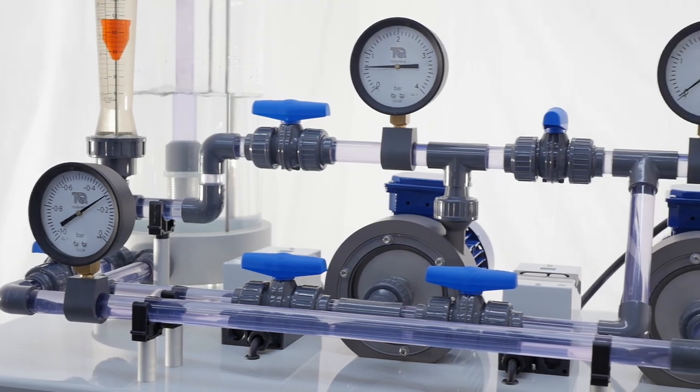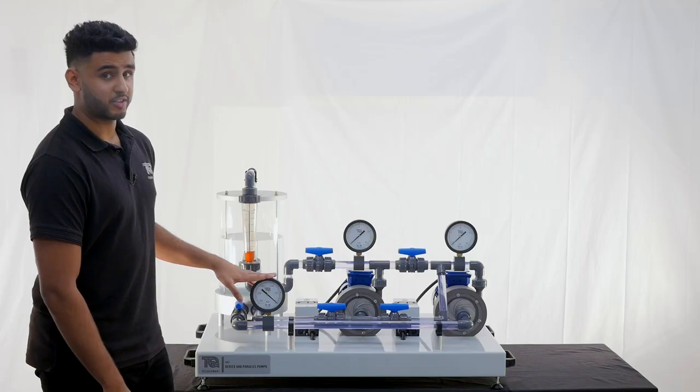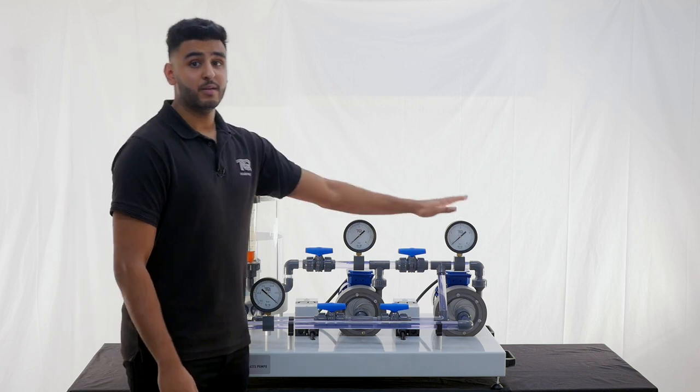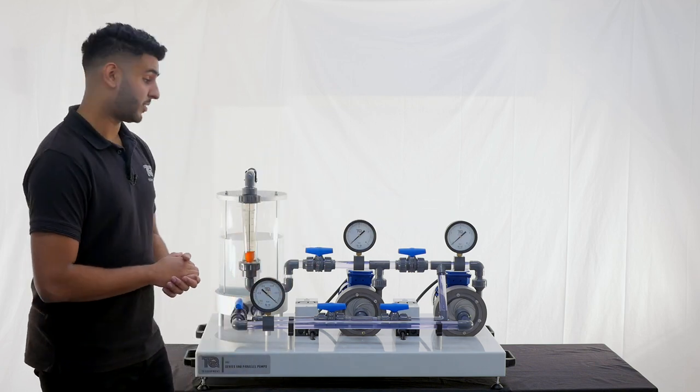There are three Bourdon pressure gauges fitted to the H52, one before the pumps measuring suction pressure, and one after each pump measuring outlet pressures. This will help when calculating the total head.